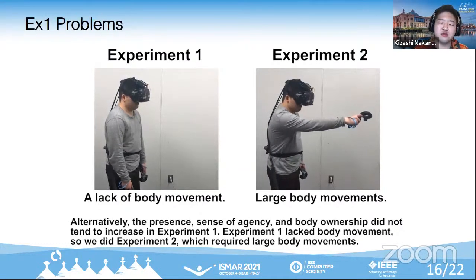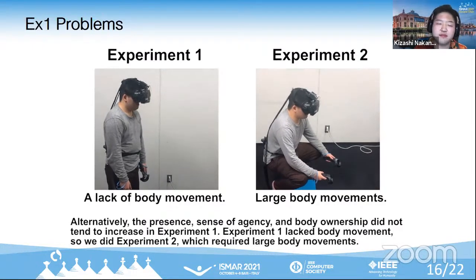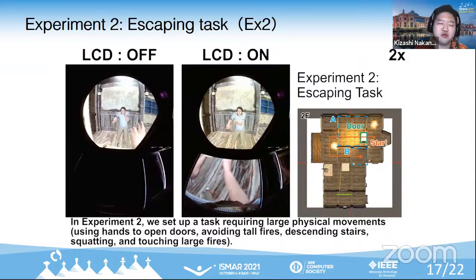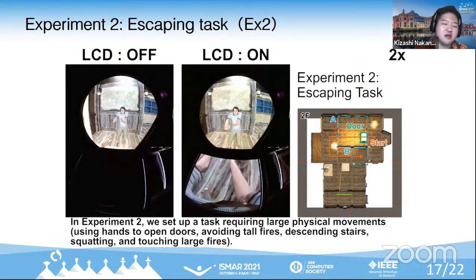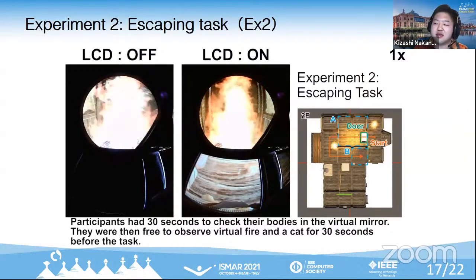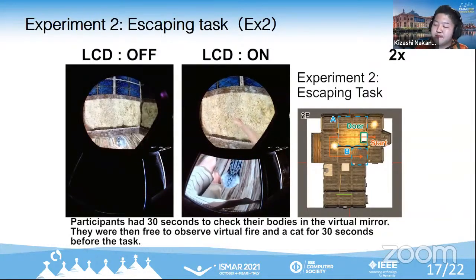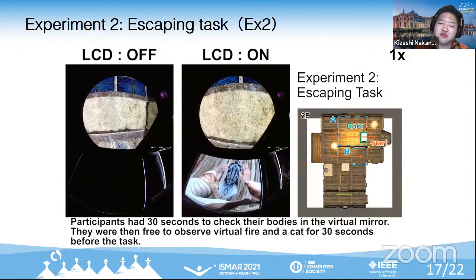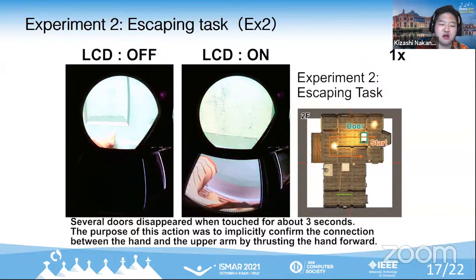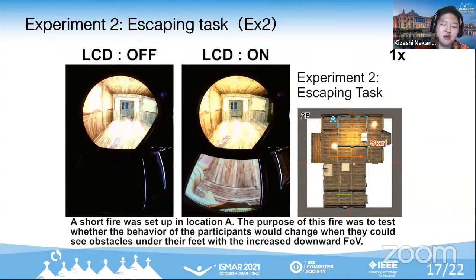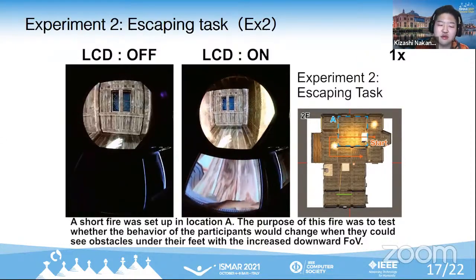In experiment one, I thought the limited effect was due to the lack of body movement. Therefore, I did experiment two with more body movement. In experiment two, participants were tasked with moving from the second floor to the first floor. First, they looked at their own bodies in the virtual mirror for 30 seconds, then were free to observe surrounding objects for 30 seconds. A large fire and a virtual cat are set up around the environment. Doors were installed at multiple locations — if they touched a door with their hands for a certain period of time, it would disappear and they could pass through. A small fire was placed at their feet and a descending staircase was also installed.